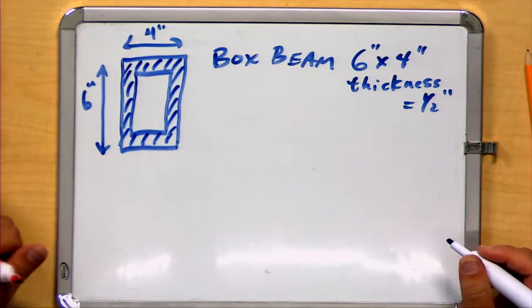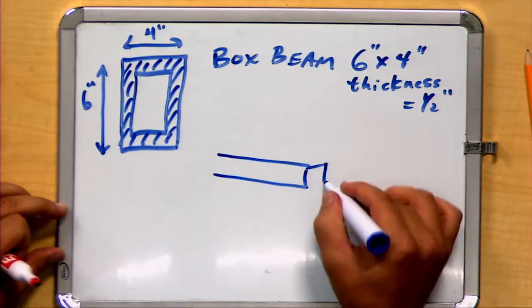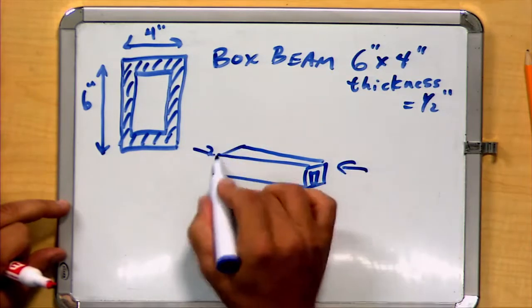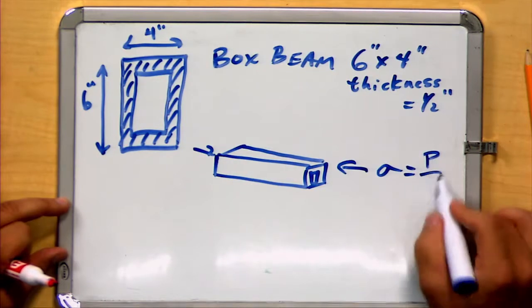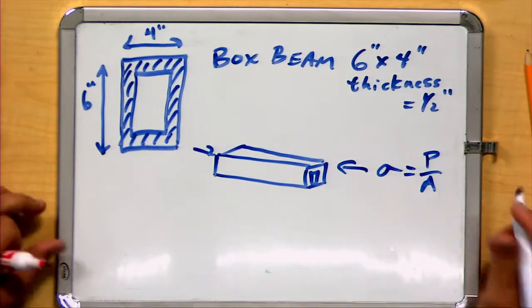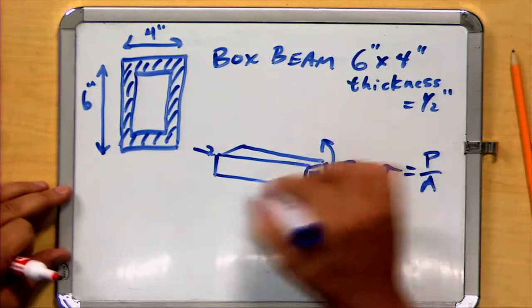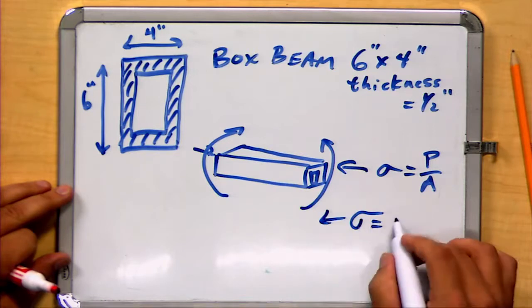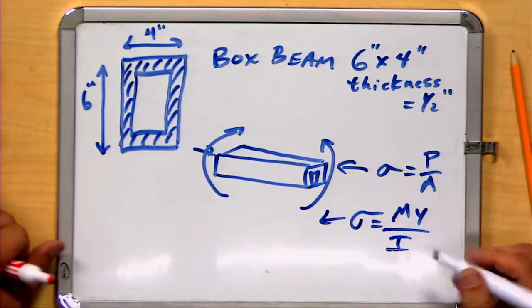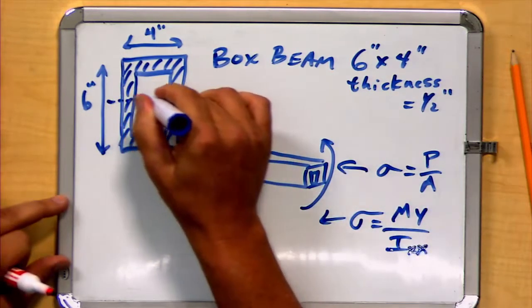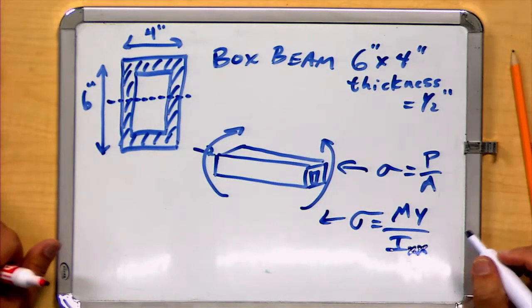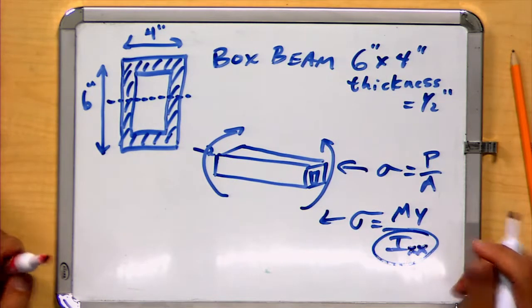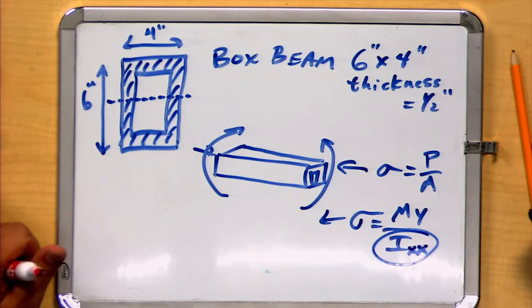Now, if we were interested in the axial stress on a beam with this cross section, we might care about the axial stress, which equals the force divided by the area. We could calculate the area using the geometry we have. But in this case, we might be interested in the bending. And if you remember, the stress due to bending, sigma equals my over i. And that i, in this case, is going to be the second moment of area, or the area moment of inertia, around the middle of the beam. So we're going to want to calculate this value, Ixx, to determine how well this box beam will resist a bending moment.